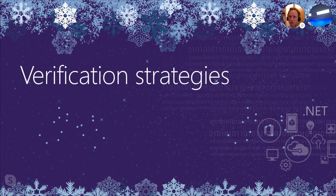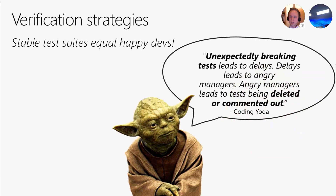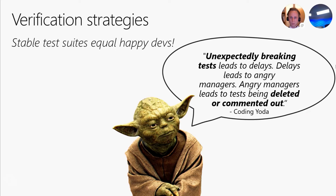Let's talk about some verification strategies available to us. Picking the right verification strategy is important — it will increase the likelihood that the test will not break unnecessarily and be able to catch regressions. As coding Yoda puts it: unexpectedly breaking tests leads to delays, delays lead to angry managers, and angry managers lead to tests being deleted or commented out — and we do not want that. In this library, the two most common approaches are targeted inspection of markup and performing semantic comparison of it.